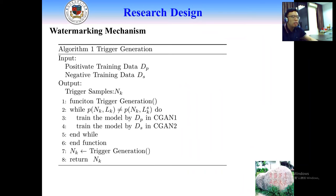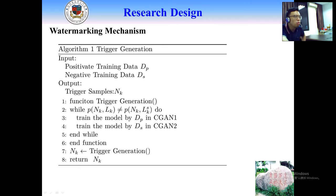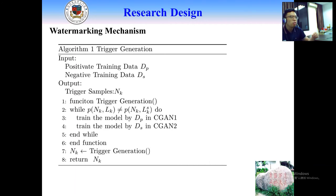Algorithm 1 is the trigger generation process. We use two datasets noted as Dp and Ds, which are two classification datasets. In Algorithm 1, we use Dp and Ds to train CGAN1 and CGAN2, and then we exchange the discriminators between CGAN1 and CGAN2 to generate trigger data samples. A while loop runs until the probability of sample Nk with label Lk equals the probability of sample Nk with label Lk_s, so that Nk is a data sample on the boundary of Dp and Ds classification.